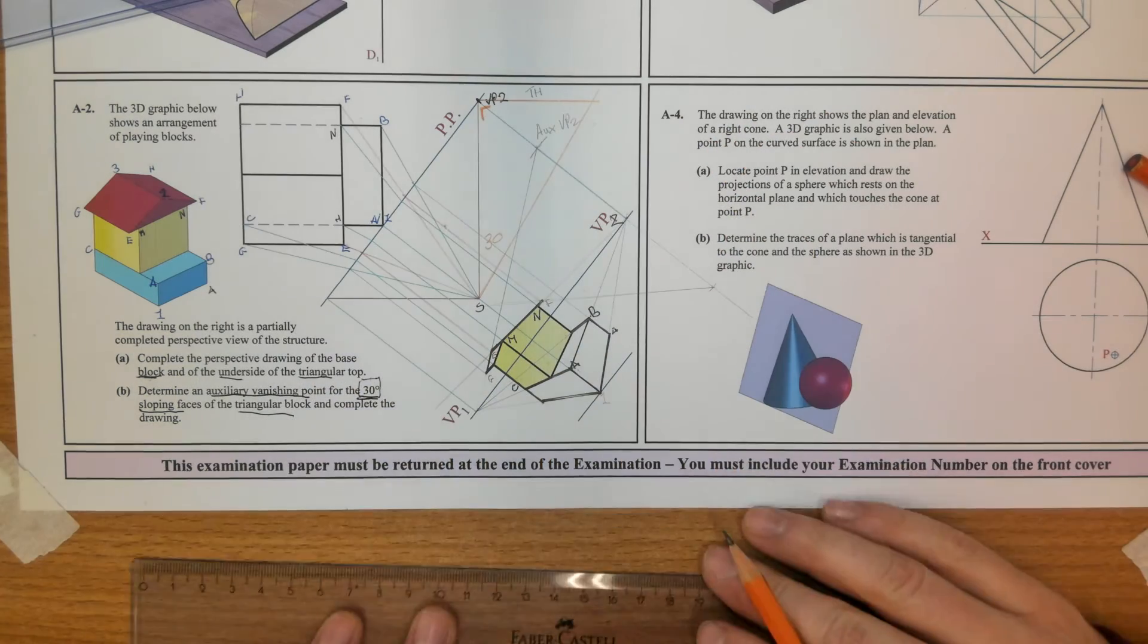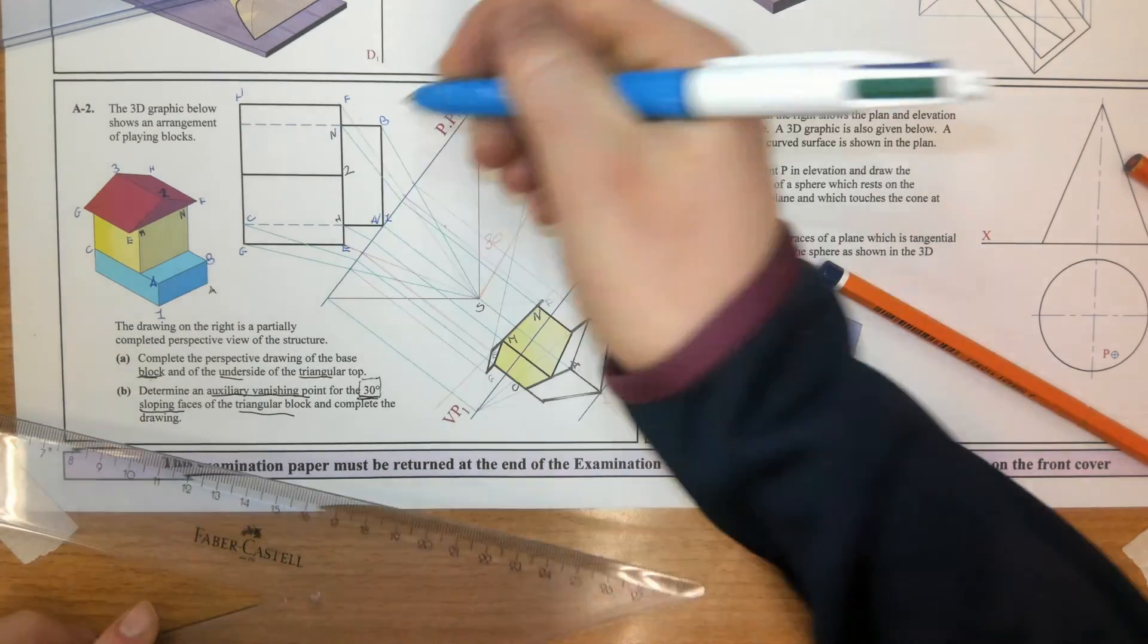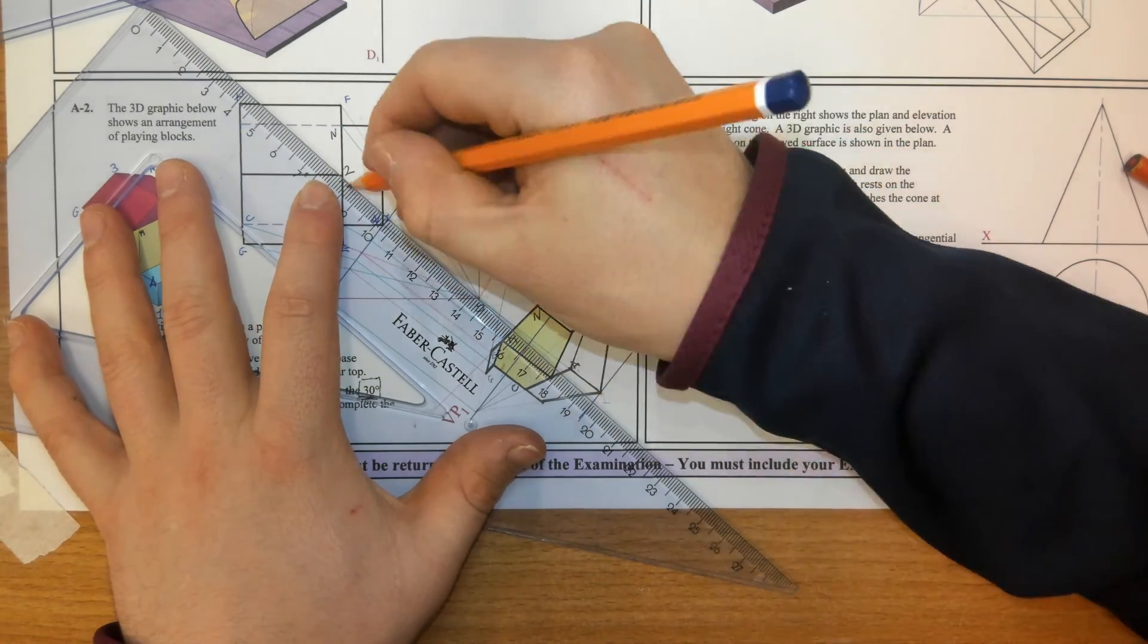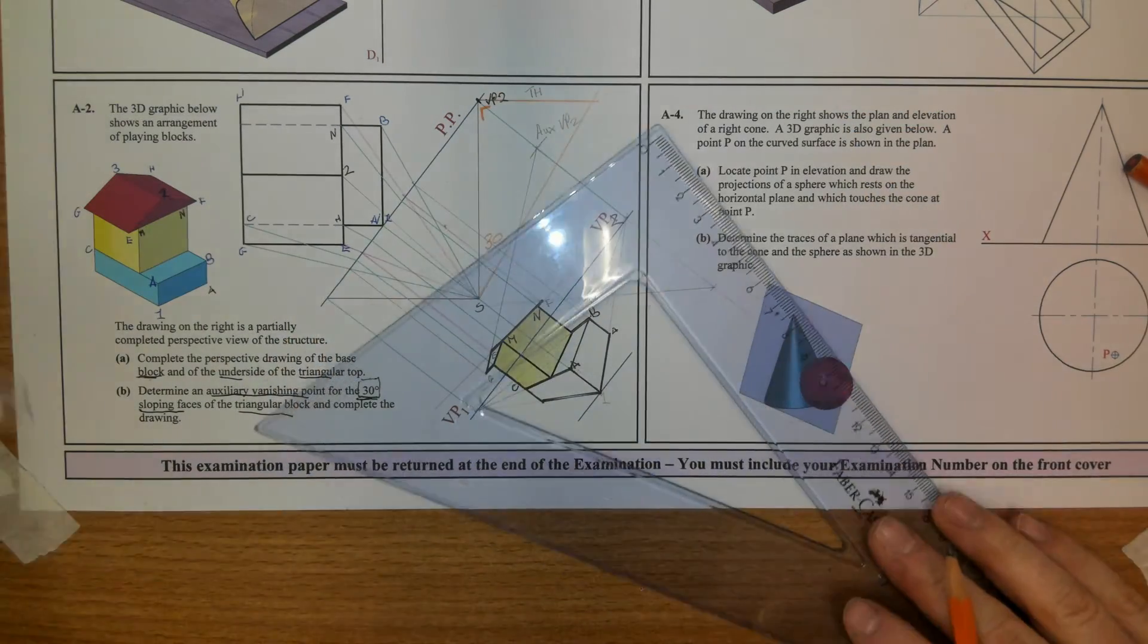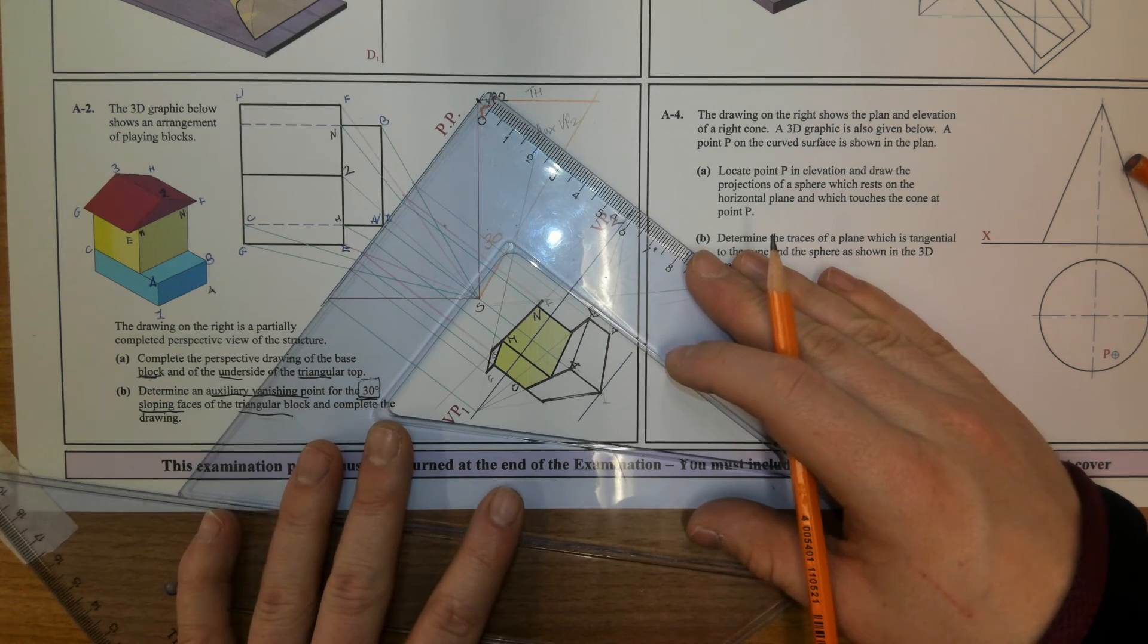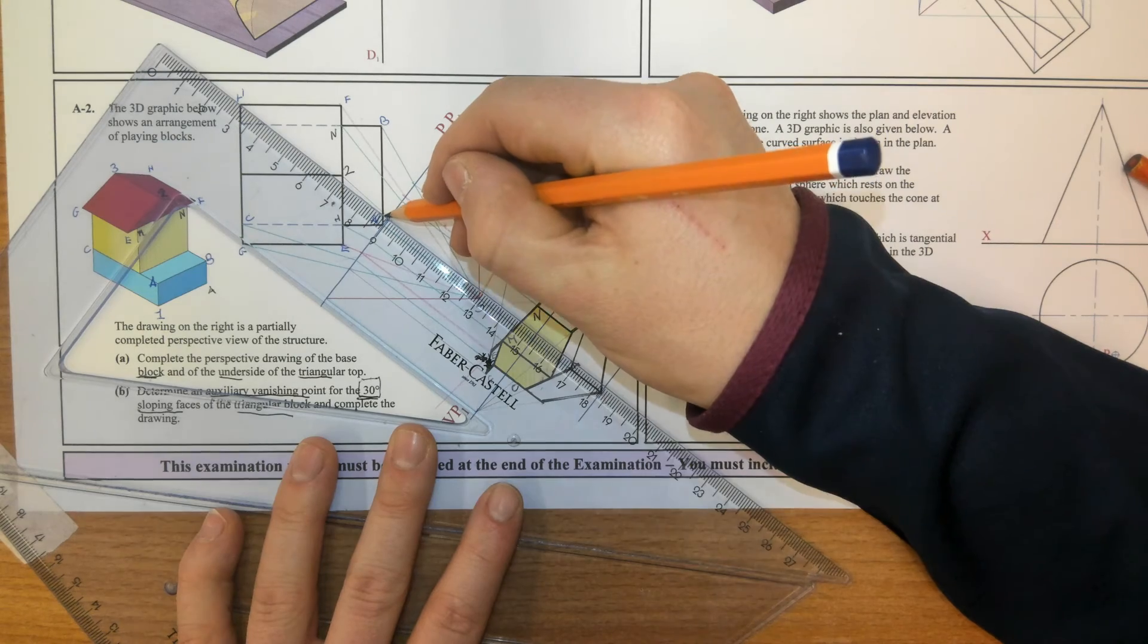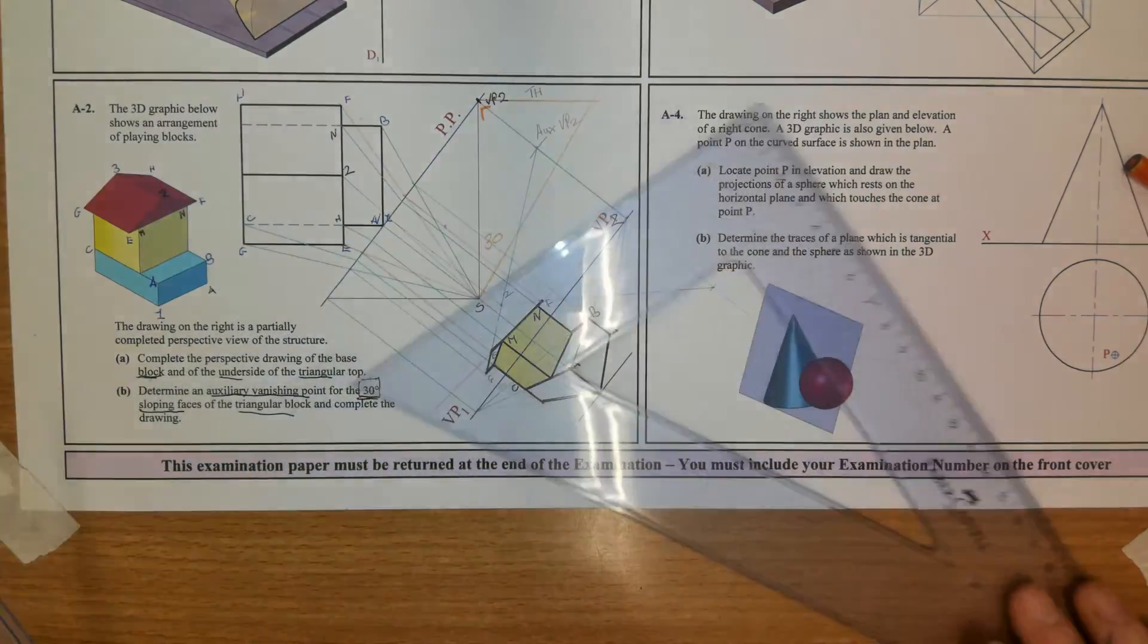Now if I wanted to find number 2, the second way I could find 2 in plan, as I said, join all the points to S. Where it pierces the picture plane. Down perpendicular to the picture plane. And then where it hit the line there, that's point 2.